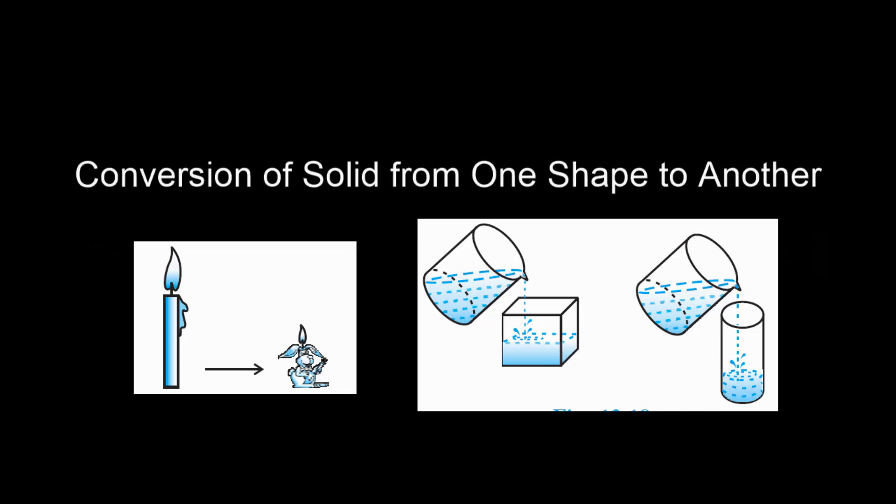Surface Areas and Volumes. We have started the topic: conversion of solid from one shape to another. The key point is if we recast one 3D figure into some other 3D figure in a different way — you can reshape it — however, the volume will remain unchanged.